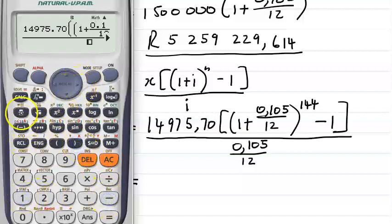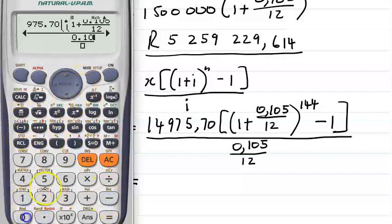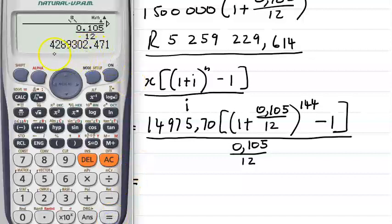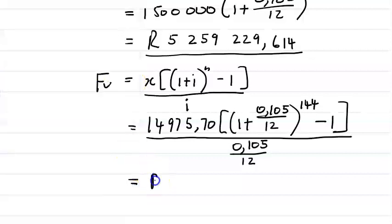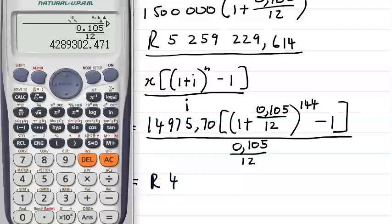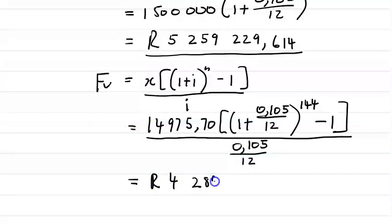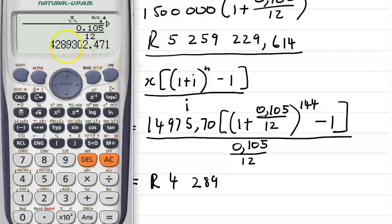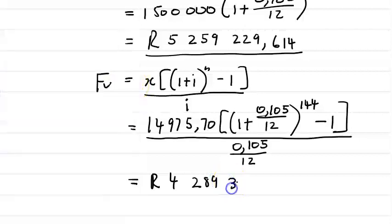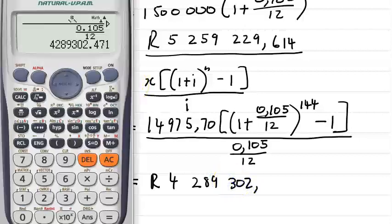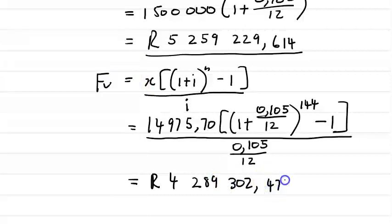Putting that into the calculator: 14,975.70 times [(1 + 0.105/12)^144 − 1] divided by 0.105/12. This equals R4,289,302.471. We said we'll round off at the end.